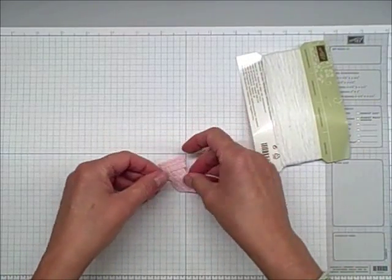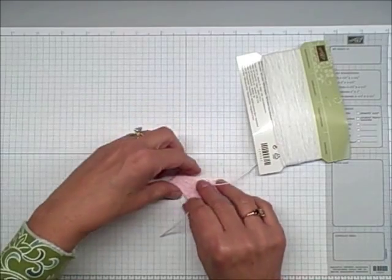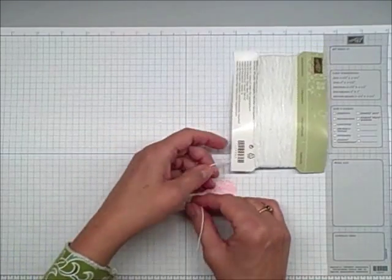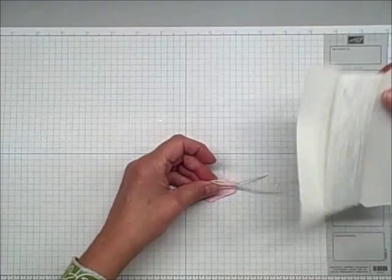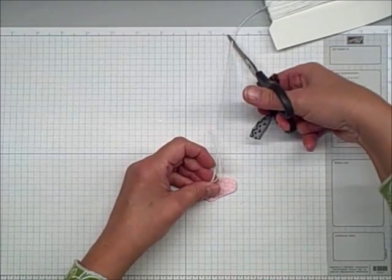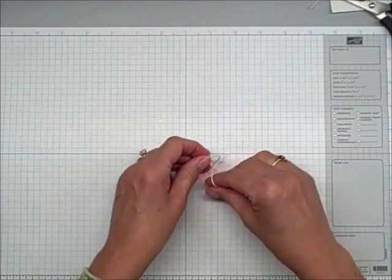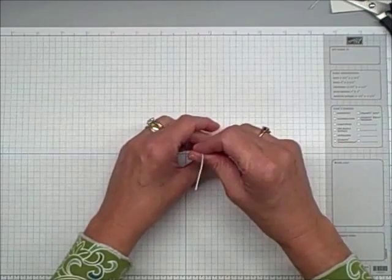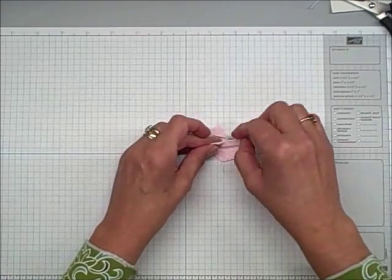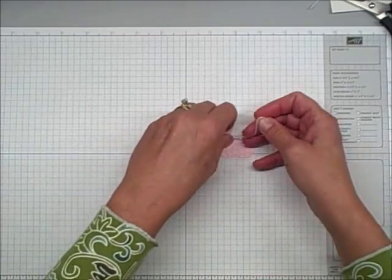And then I used, I'm using some Whisper White Baker's Twine. Actually, I'm going to cut this. Usually I do it right on here, but I think it might be simpler because I have a little bit of a funky angle with the camera for doing this. I'm just going to tie it in a bow, just like you're tying a shoe on this one. Very simple. But it adds, I think, to the whole Baby Bootie look.